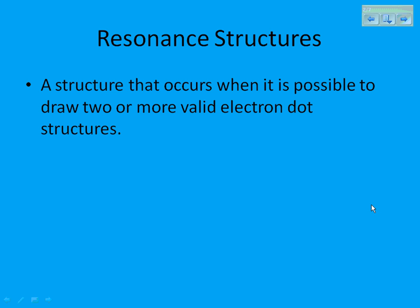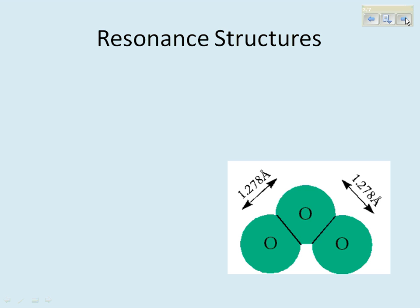It's a structure that occurs when it is possible to draw two or more valid electron dot structures. What that means is when you have a bond, well first of all, let's look at the details.